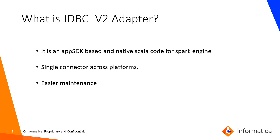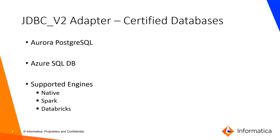The JDBC v2 adapter is an App SDK-based native Scala code for the Spark engine. It is a single connector across platforms — for both on-premise and cloud. It is known for easier maintenance. There are two certified databases as of Informatica 10.4.x: PostgreSQL and Azure SQL Database. Other databases are planned and are on the roadmap. The supported engines for JDBC v2 are Native, Spark, and Databricks.